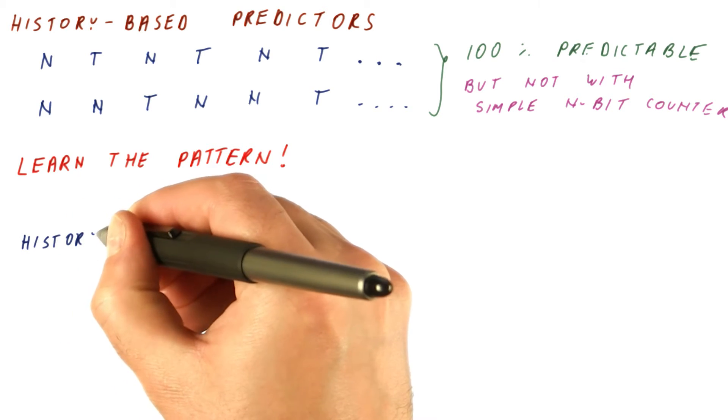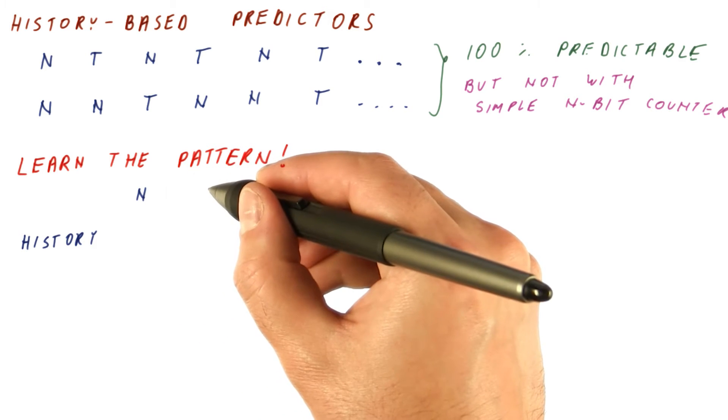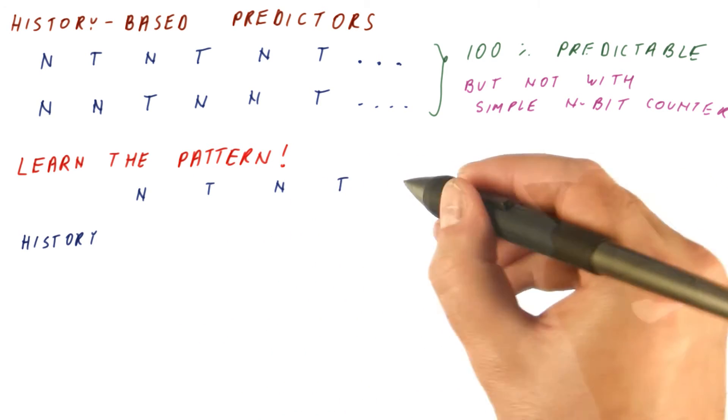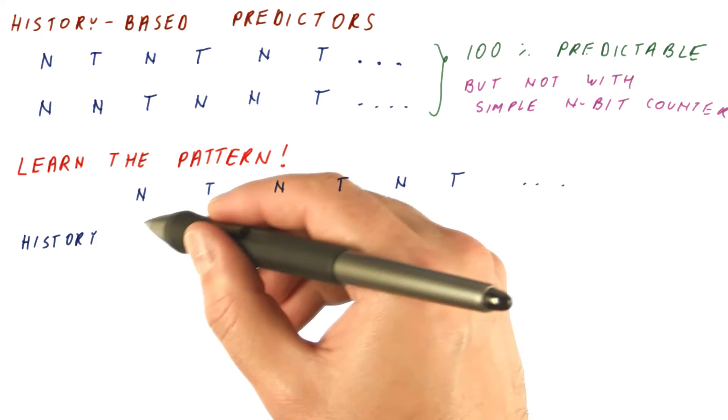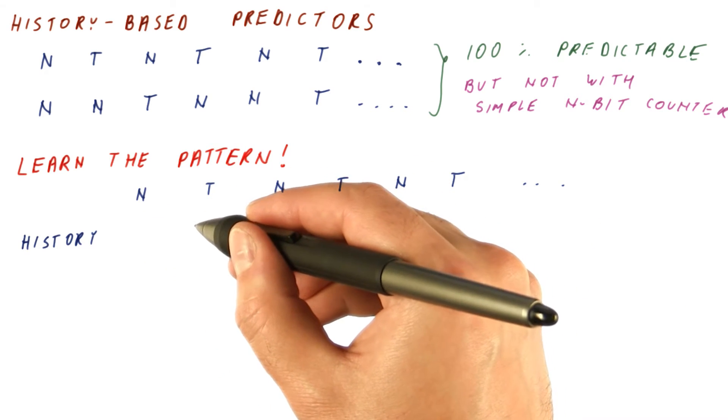What were the latest so many outcomes? For example, if we have the not taken, taken, not taken, taken, and so on behavior. Let's ignore the first one for now, and look at this particular prediction here.